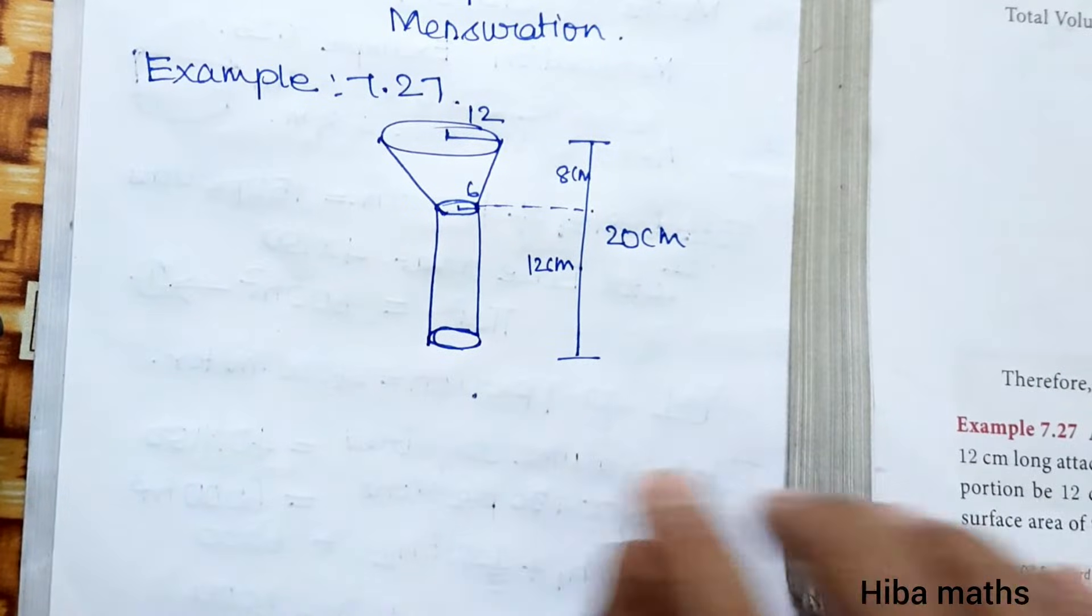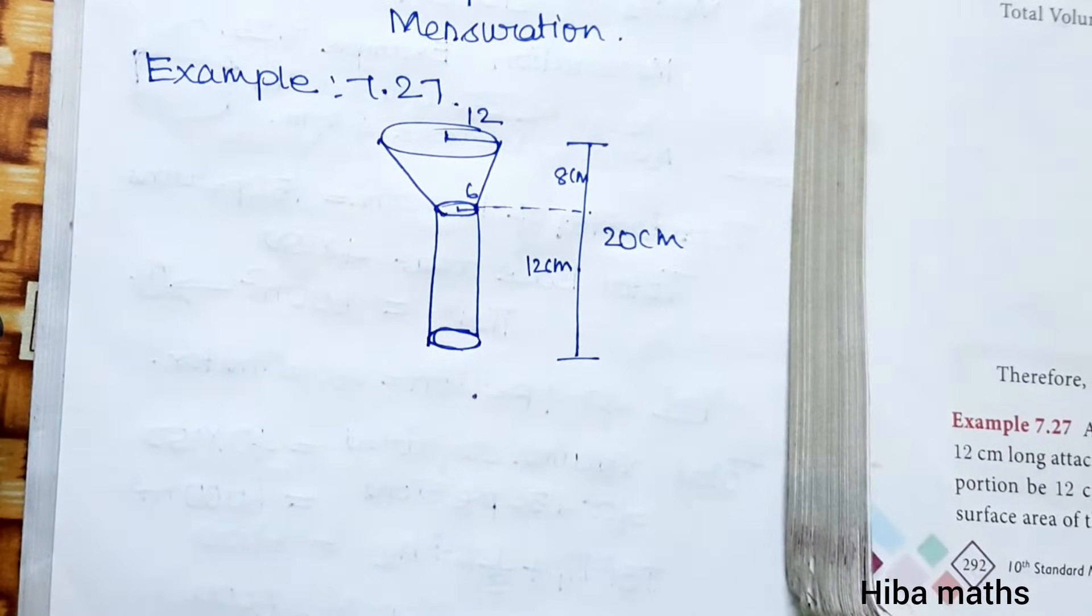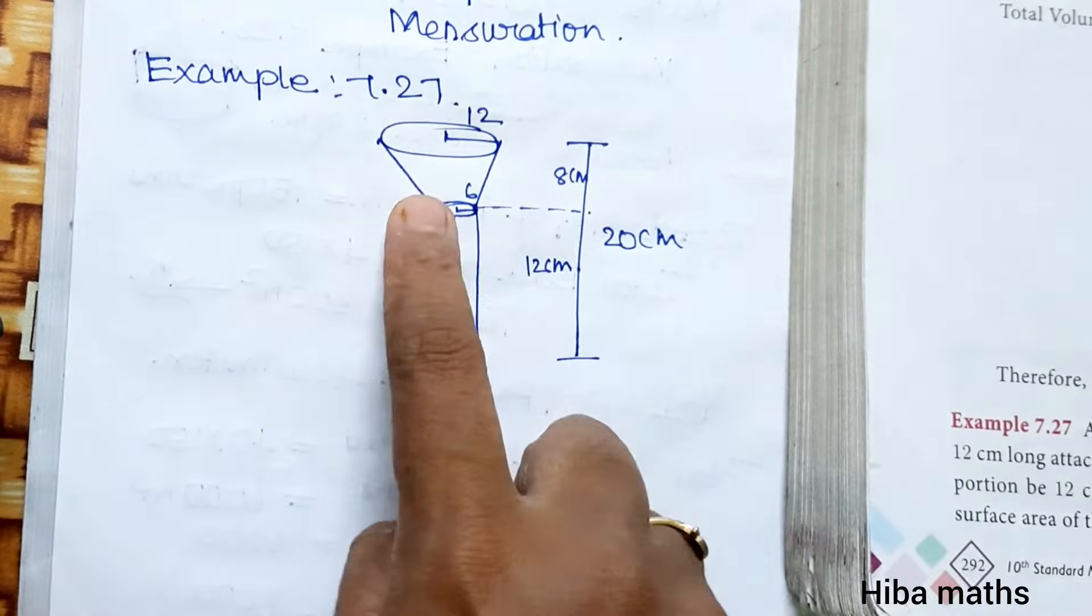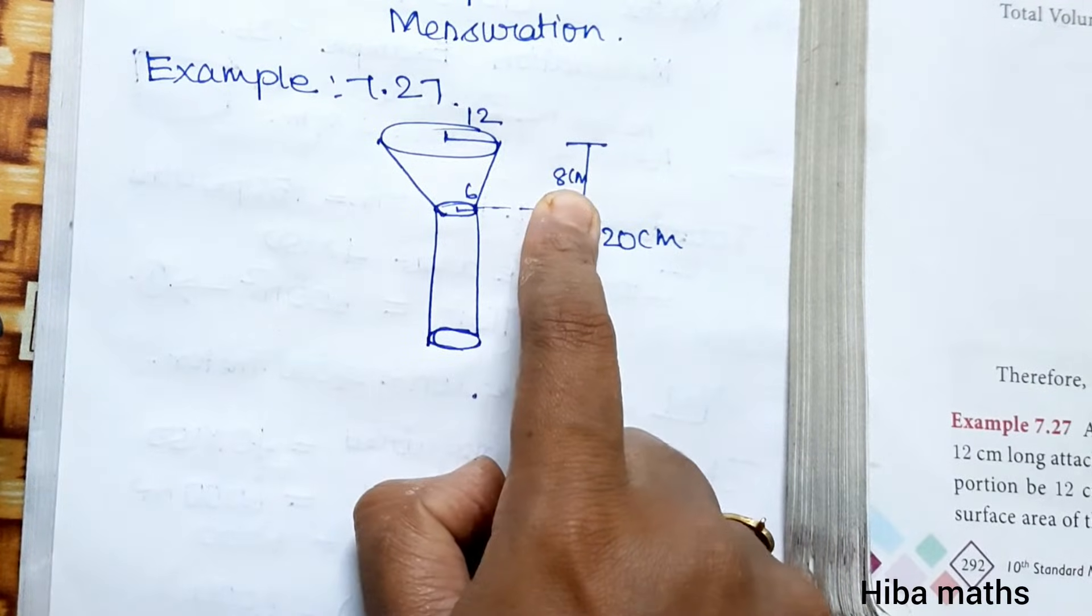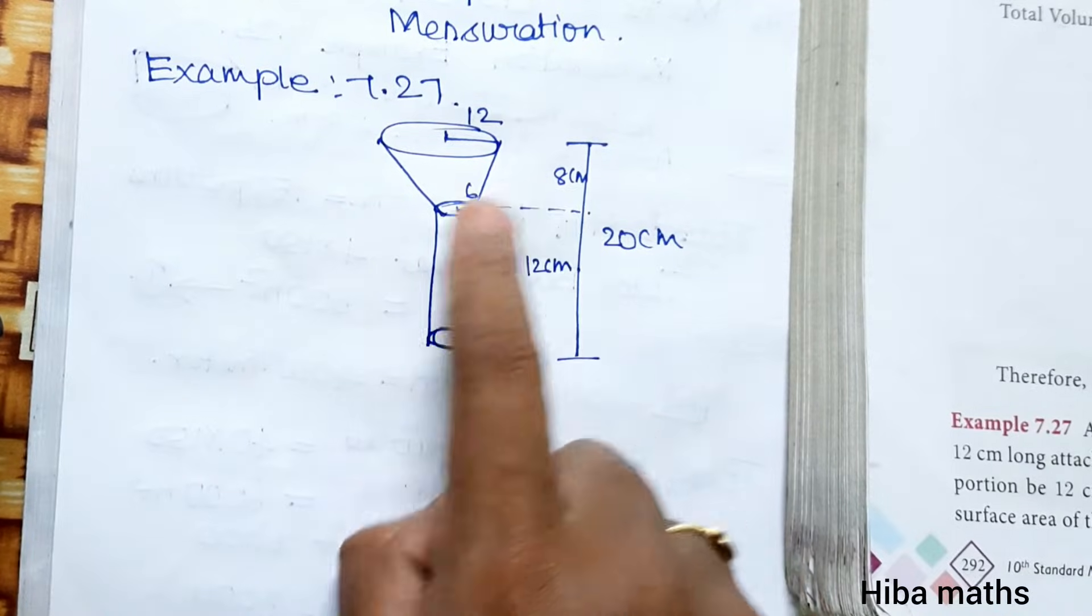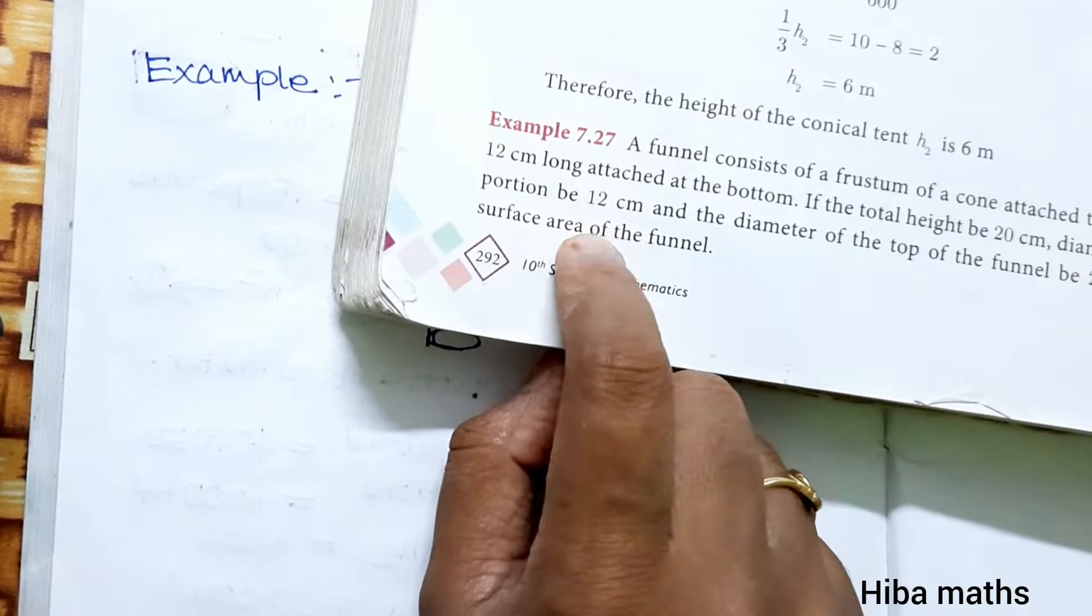In the diagram, total height is 20 cm. Cylinder height is 12 cm, so 20 minus 12 is 8 cm, which is the frustum height. Cylinder diameter is 12 cm.